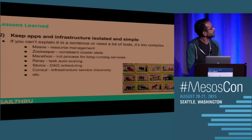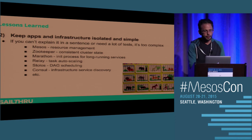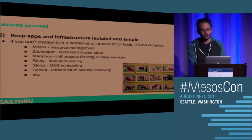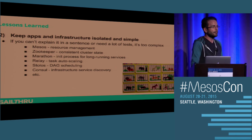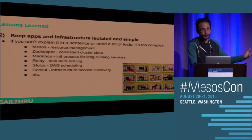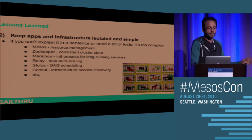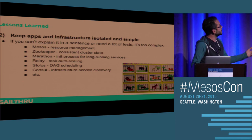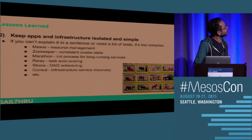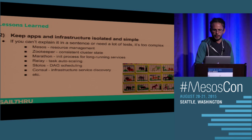Second, keep apps and infrastructure really isolated and simple. One of my team members put it this way: if you can't explain it in a sentence or you need a lot of tests, it's too complicated. There was always the desire to overload something — like using Zookeeper both for coordination among Mesos masters and as a key-value store in the application. Really bad idea. Keep things clean and separated. Mesos: resource management. Zookeeper: consistent cluster state. Marathon: init process for long-running services. Relay: task auto-scaling. Stolos: DAG scheduling. Consul: service discovery. Everything simple and easily explainable.